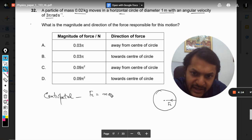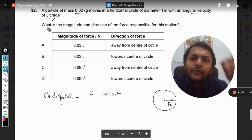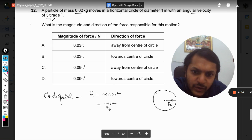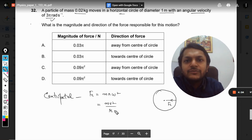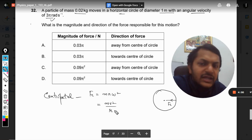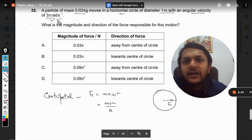The magnitude of this force is given by mr omega square if we talk in terms of radian per second, or it can be mv square by r if we talk in terms of tangential velocity. The units given are radian per second, so we would be substituting that value.